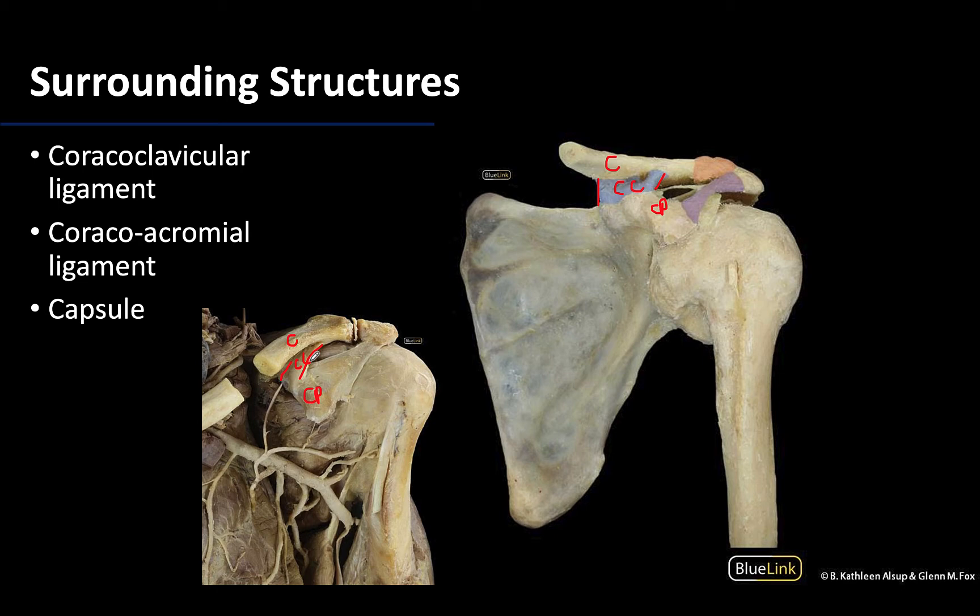This ligament plays a very important role in the integrity and stability of the acromioclavicular joint, so severe shoulder separations often involve damage to this ligament.